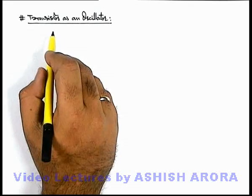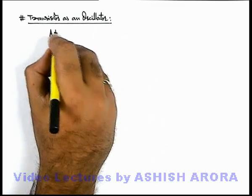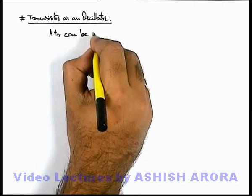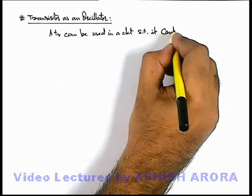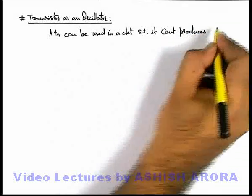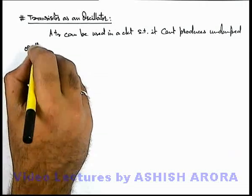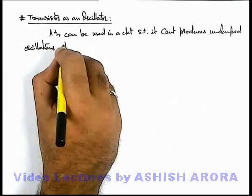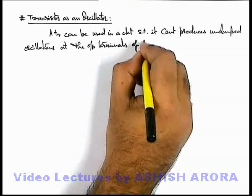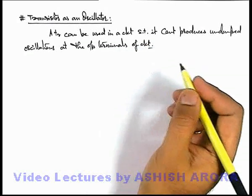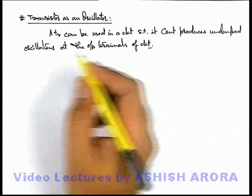Let's now discuss how a transistor can be used as an oscillator. A transistor can be used in a circuit such that it continuously produces undamped oscillations at the output terminals of the circuit. The basis is the same as what we have discussed in the situation of a transistor as an amplifier.